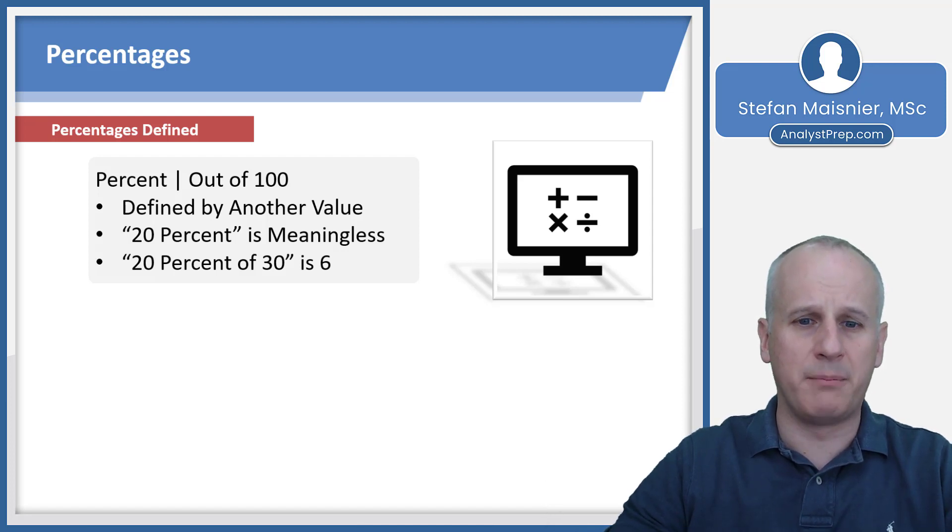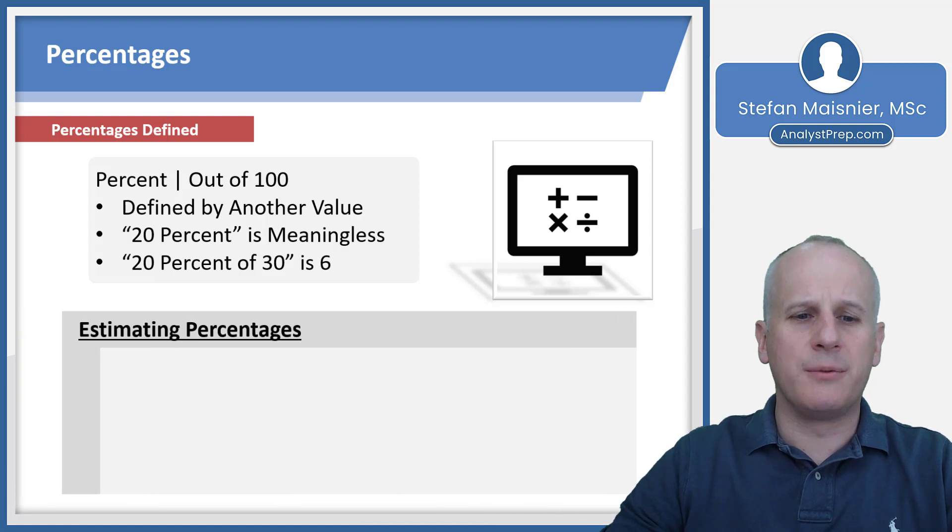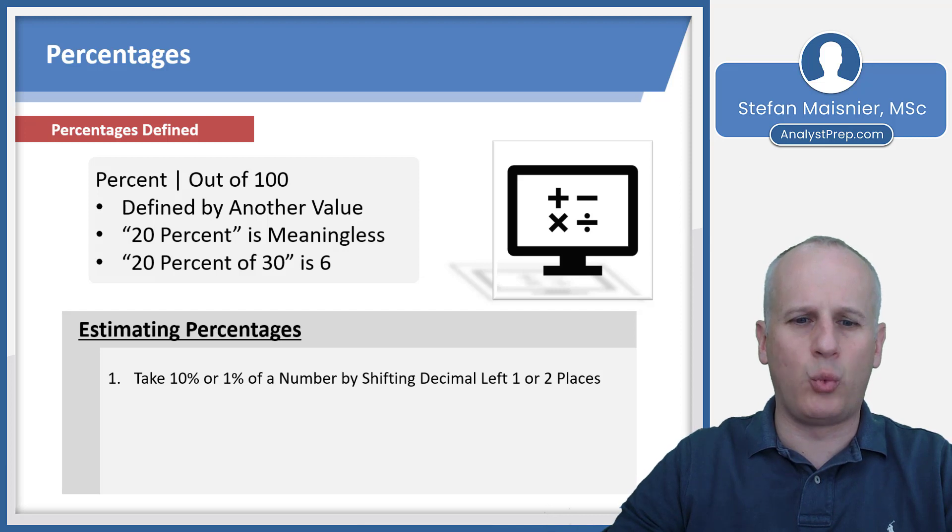Let's talk about how we can estimate percentages. The first step is to take 10% or 1% of a number by shifting the decimal left one or two places. So 10% of 30 will become 3 because the decimal point in 30 is after the zero in the units digit, and you shift that left.